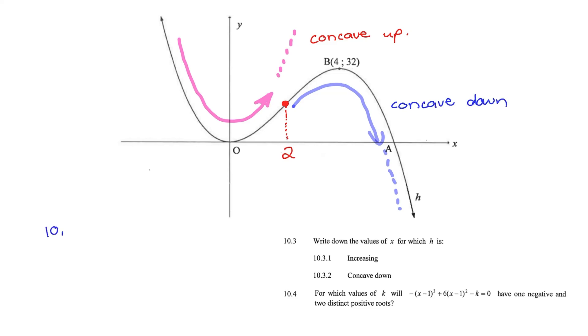So 10.3.2. The graph is concave down for x bigger than 2. So everything to the right of the point of inflection.